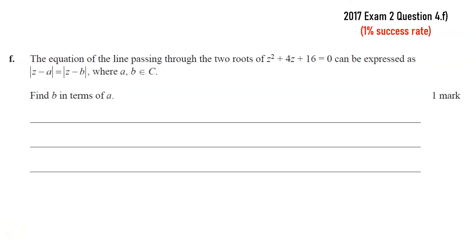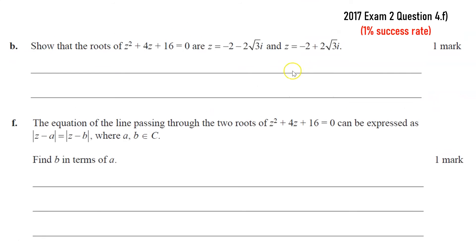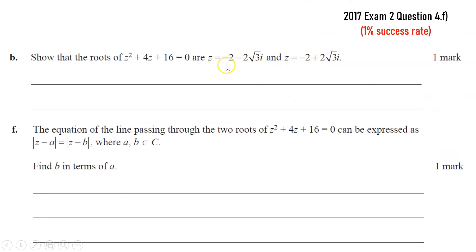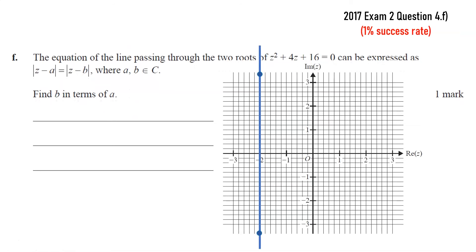Alright, now onto this question from 2017, which really, you know, 99% of students were not able to get. The equation of the line passing through the two roots of this quadratic can be expressed in this form. Find b in terms of a. Well, to start with the roots, I mean, we were given those actually in an earlier part of the question, and those roots were here, so those are two conjugates of each other. So we can easily sketch those. And what we're interested in is the line passing through those two roots. And we want to express it in this form with the two modulus.